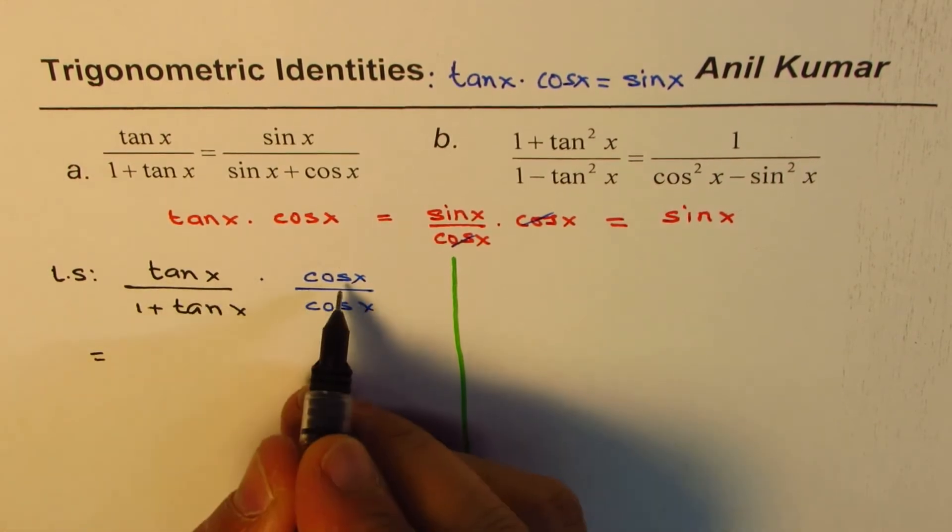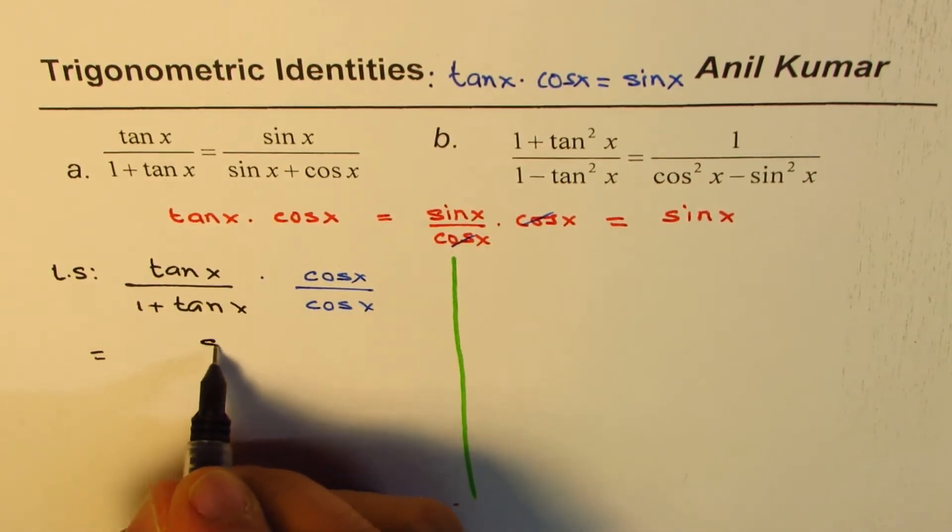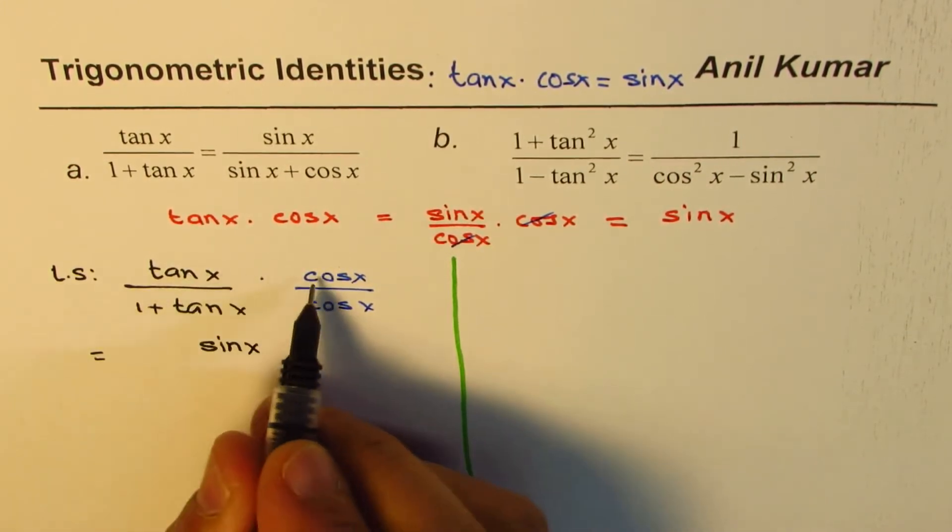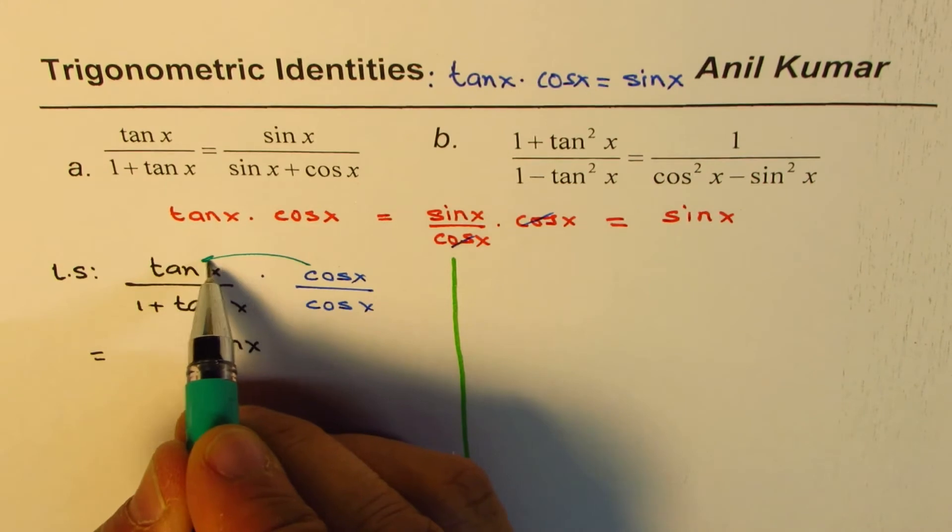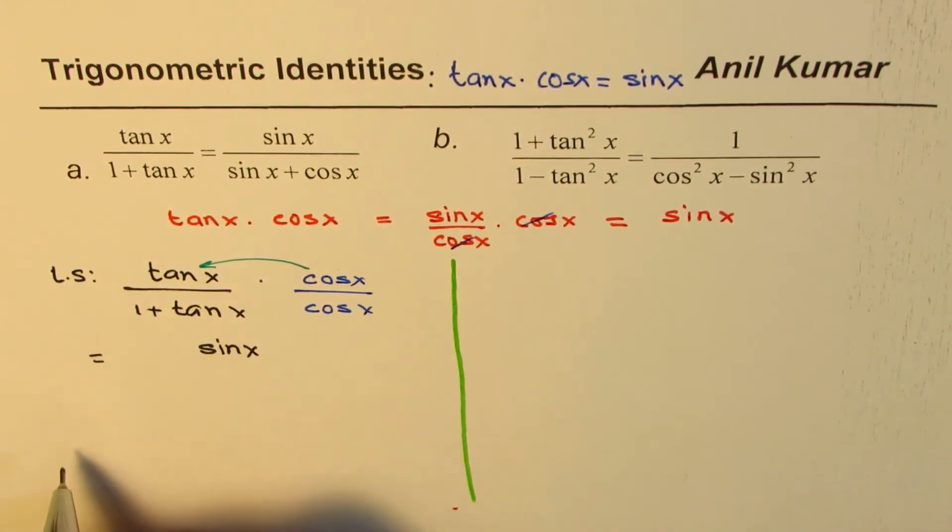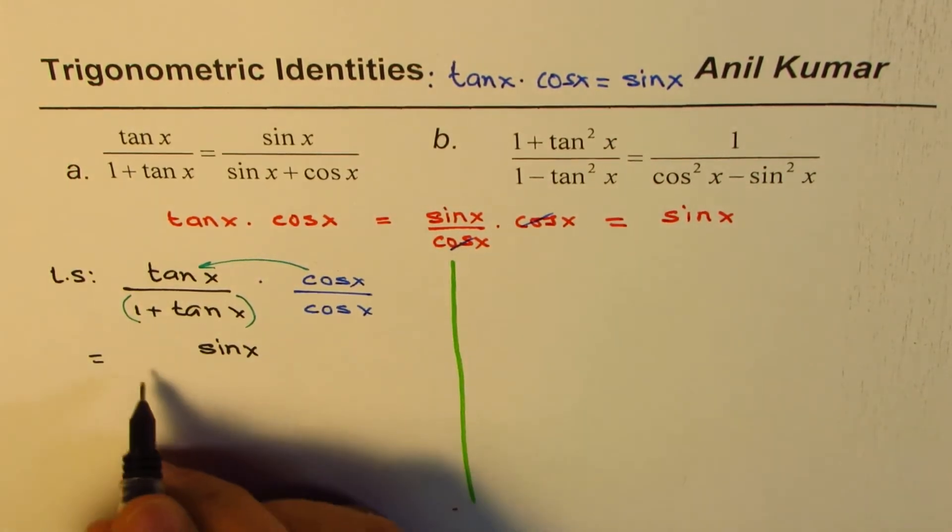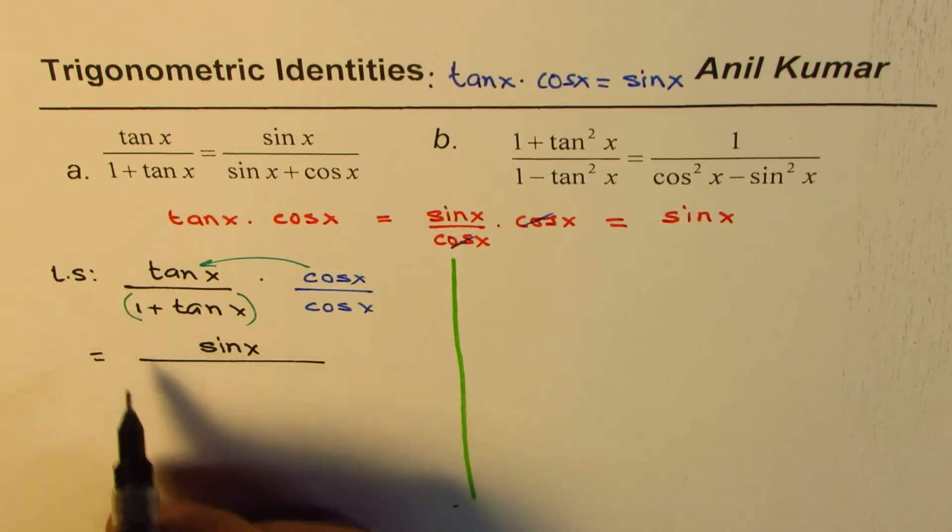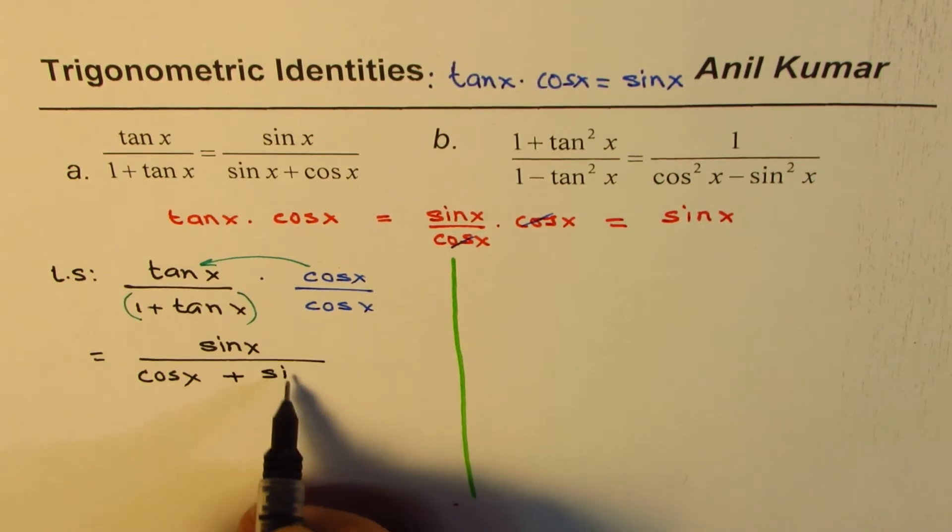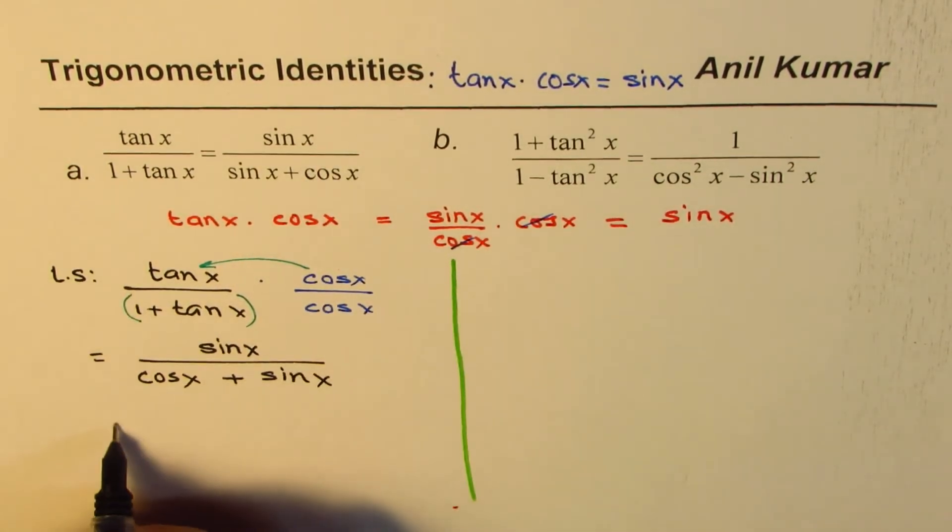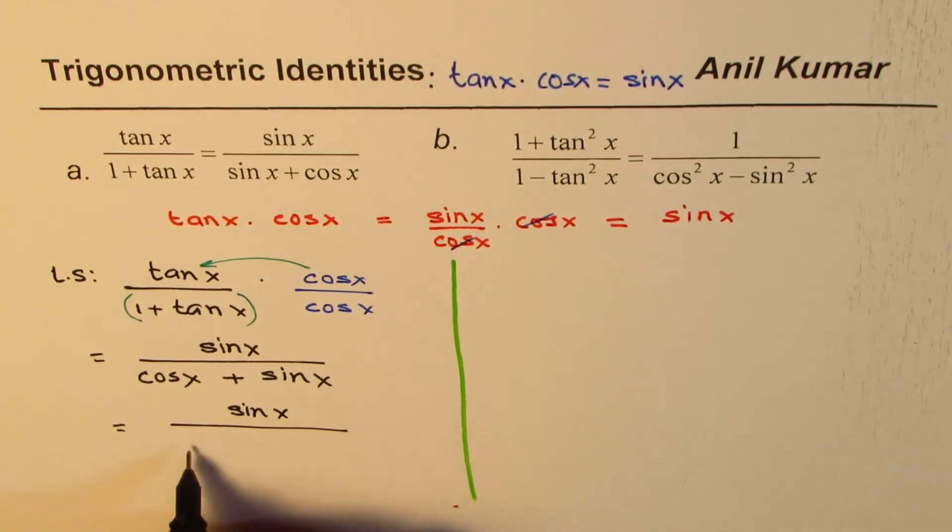Now, what is tan x times cos x? Tan x times cos x is sin x. So, I am writing sin x in the numerator, tan x times cos x. So, let me just show you what I did. I just multiplied this to get sin x. Now, I am going to multiply 1 plus tan x by cos x. What do I get? 1 times cos x is cos x. And tan x times cos x is sin x. Perfect. This is what I have. So, let me add a step, which really is not required.